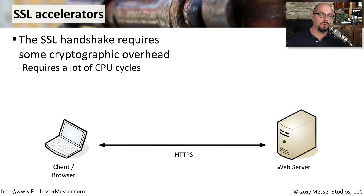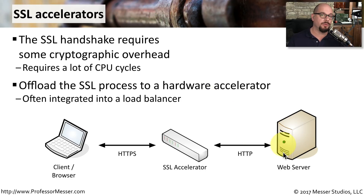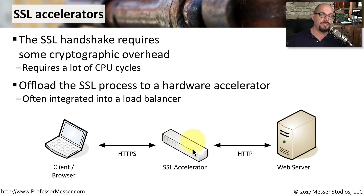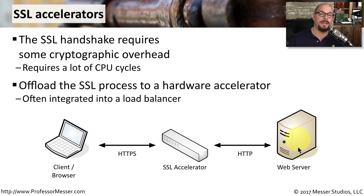If you're sending encrypted communication to a web server, you're probably communicating with the HTTPS protocol. This requires a cryptographic handshake prior to sending encrypted data, and that handshake takes up a number of CPU cycles. If many people are all hitting a web server at the same time, it could be quite a load just to set up and maintain these cryptographic communications. Instead, you can put an SSL accelerator in the middle — the client communicates to the SSL accelerator over HTTPS, and the SSL accelerator communicates back to the web server over HTTP, effectively offloading the HTTPS encryption process onto a purpose-built hardware appliance. That way, many people can communicate simultaneously to your web server while the web server simply handles the web services.